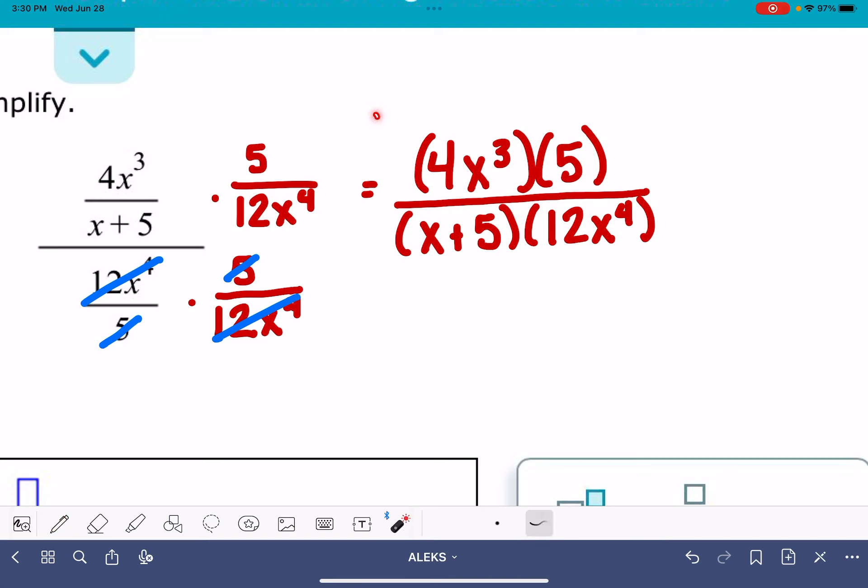So what I'm doing is looking for things that are in the numerator that are also in the denominator that I could cancel. I know that I can simplify the 4 and the 12 if I divide both the top and the bottom of this fraction by 4.